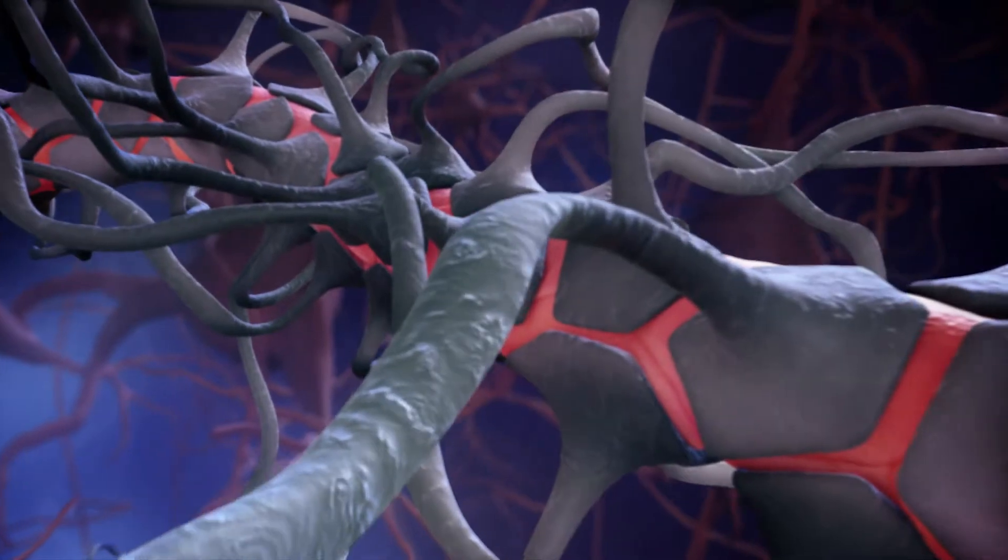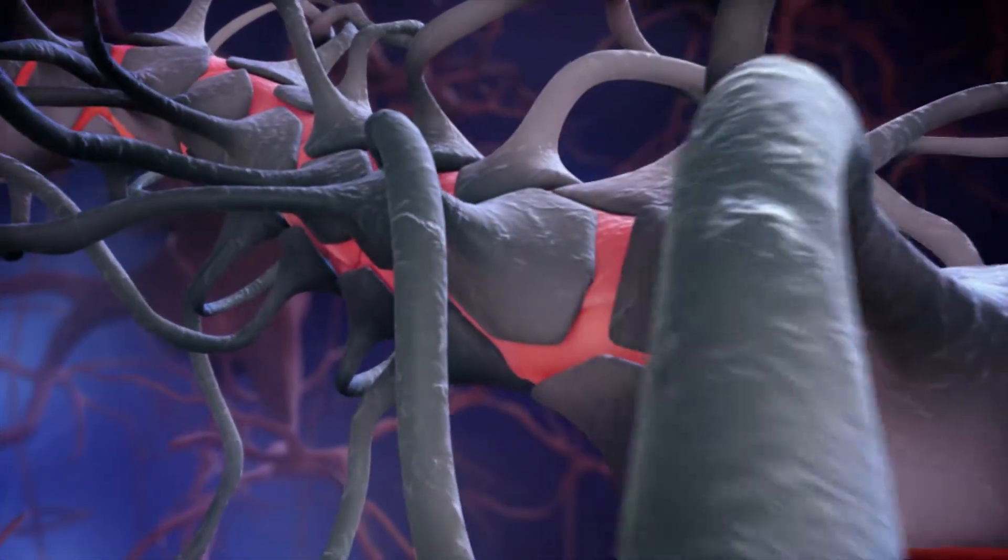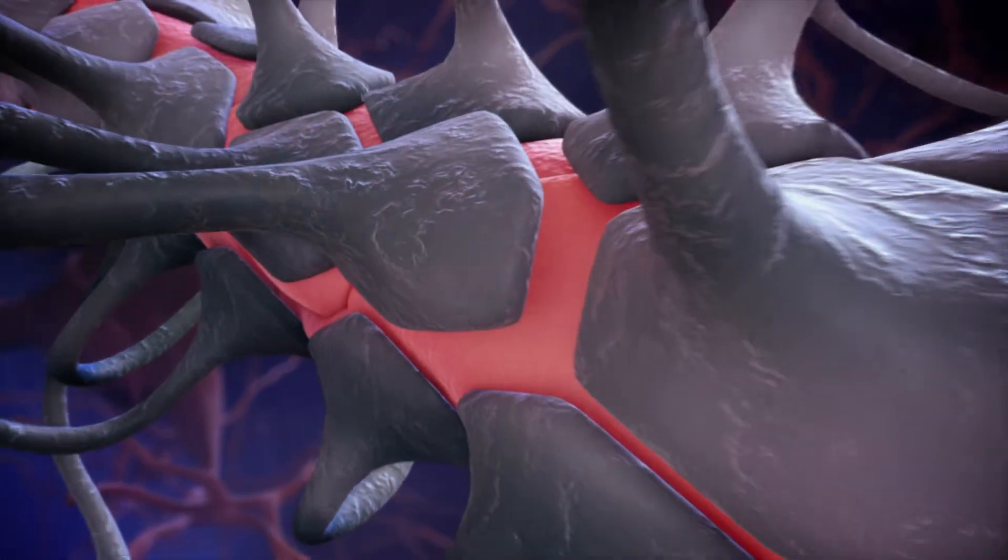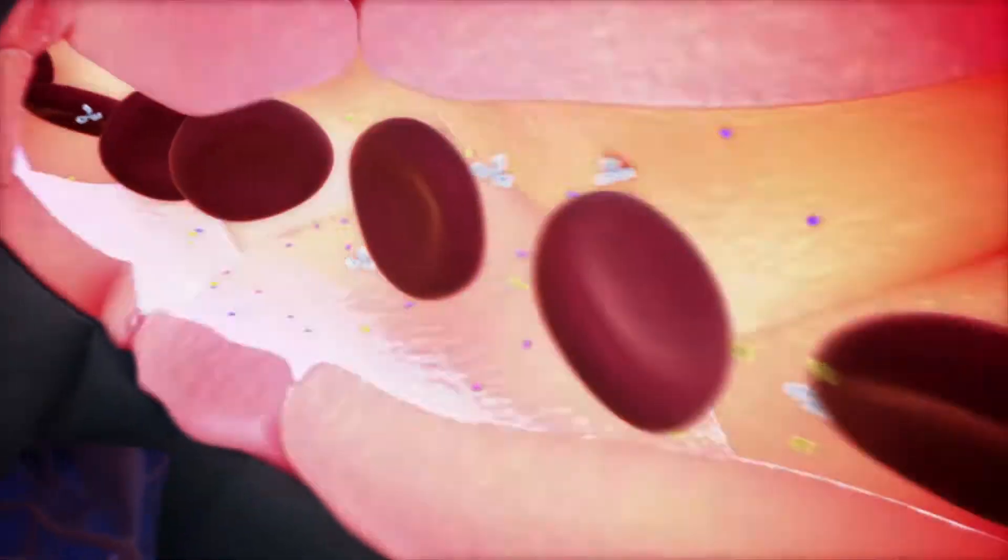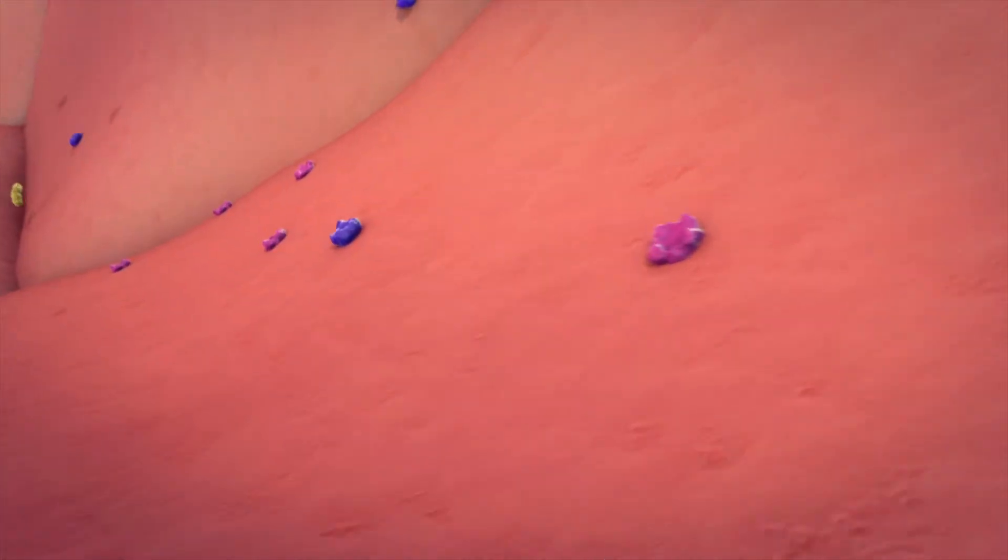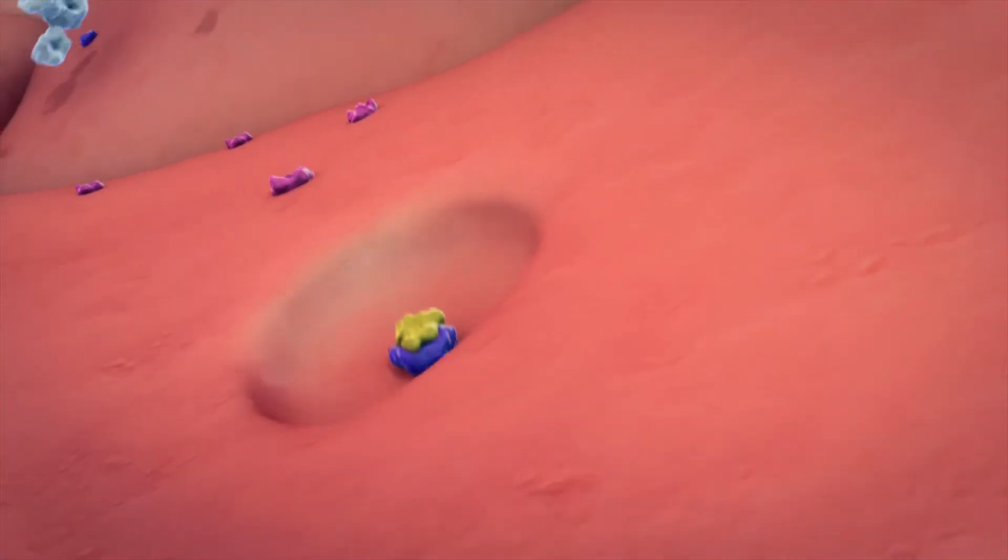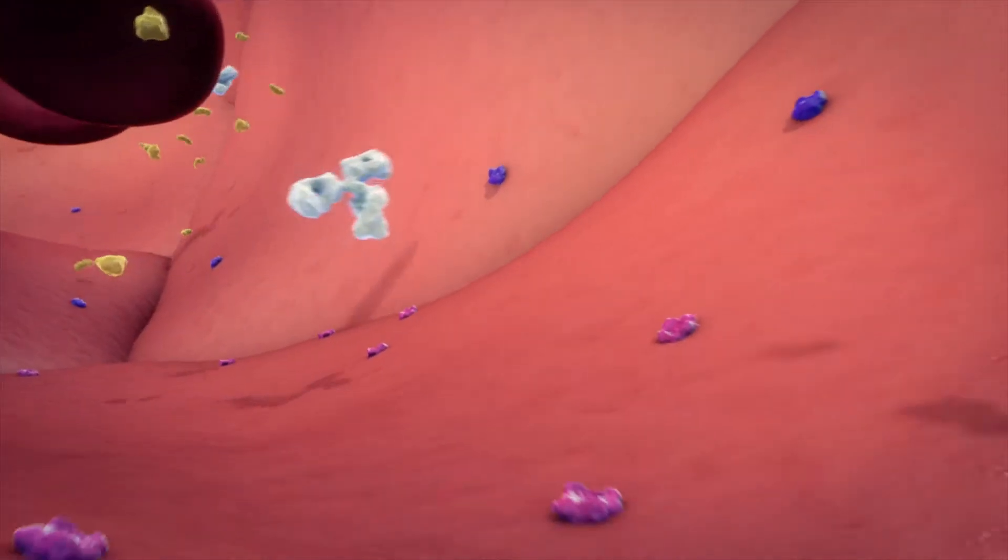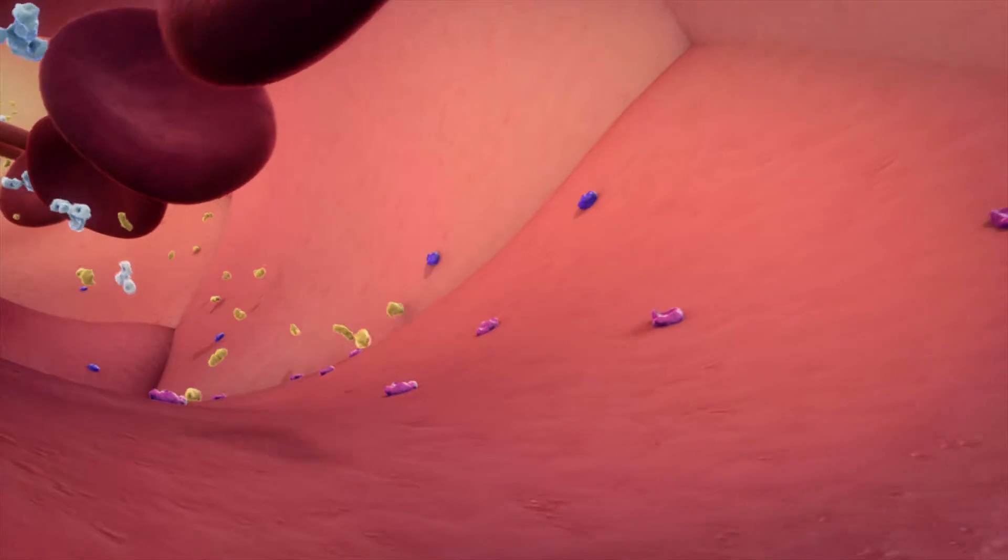The blood-brain barrier continues to be a formidable obstacle in applying therapeutic antibodies in the brain to treat neurological disorders. The blood-brain barrier's primary function is that of a gatekeeper. By allowing only the right substances through, while preventing harmful substances from crossing over, it maintains a safe and constant environment in the brain.